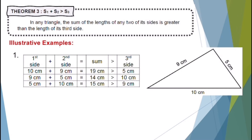Next, 9 plus 5 centimeters equals 14 centimeters, which is greater than the third side of 10 centimeters. Next, 5 plus 10 centimeters equals 15 centimeters, which is greater than the third side of 9 centimeters. Notice that the sum of the lengths of any two sides of a triangle is always greater than the length of the third side.